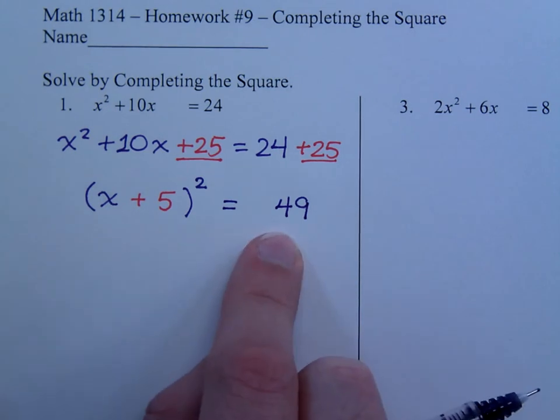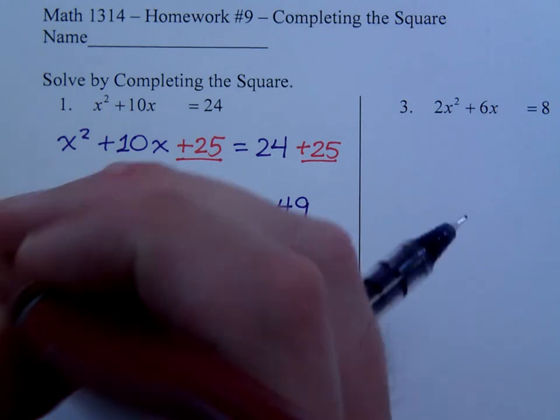So, now I have x plus 5 quantity squared is equal to 49. And you see that this is just like what we saw in homework number 8, where you would want to use the square root property. So, let's go ahead and do that.